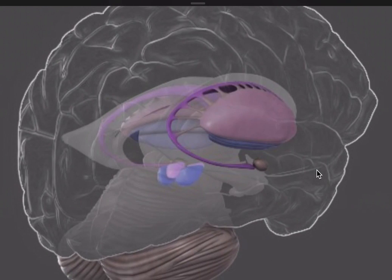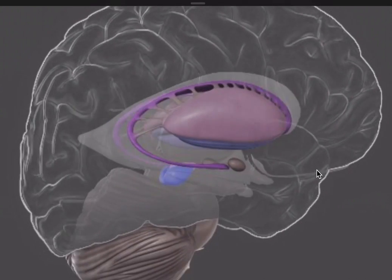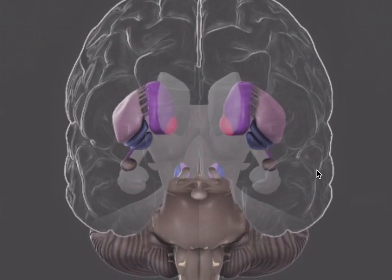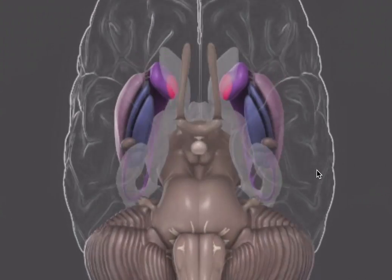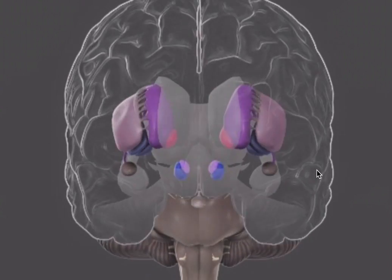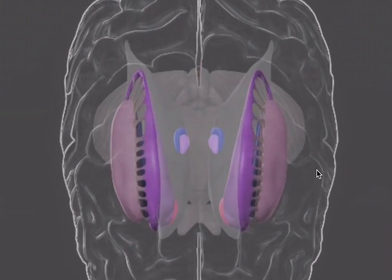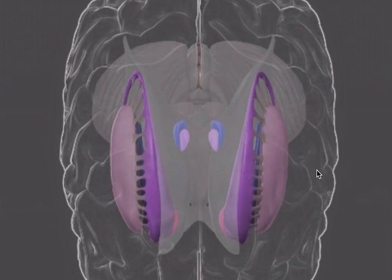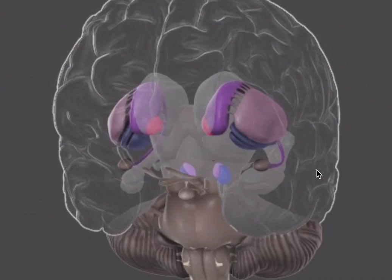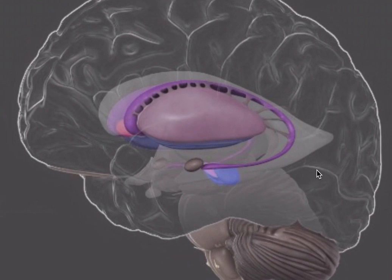I think this is a pretty good way to learn how this stuff looks and where it's situated. Remember, these aren't real structures as they appear here - they don't look purple. They're just collections of gray matter.